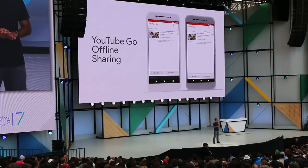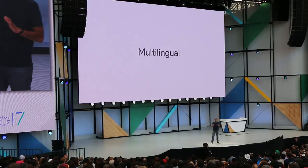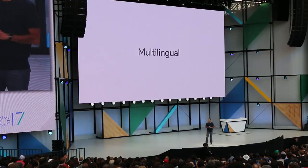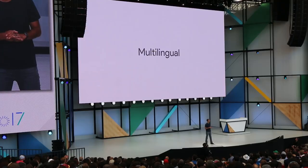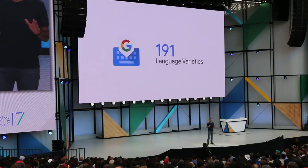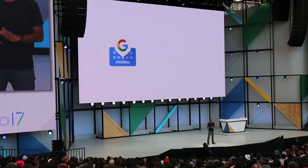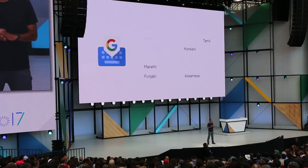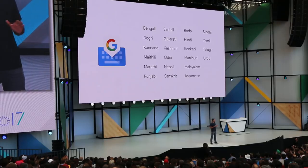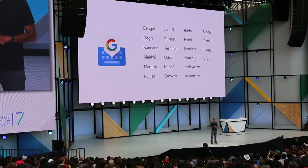But beyond data management, the Google apps will also make it easier to seamlessly go between multiple languages, which is a really common use case for people coming online today. For example, Gboard now supports over 191 languages, including the recent addition of 22 Indian languages. And there's even a transliteration feature, which allows you to spell words phonetically on a QWERTY keyboard to type in your native language script.